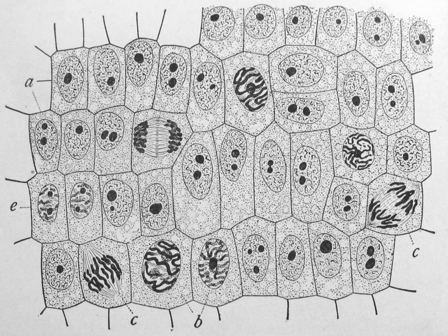Most plant and animal cells are visible only under a microscope, with dimensions between 1 and 100 micrometers. Cells were discovered by Robert Hooke in 1665, who named them for their resemblance to cells inhabited by Christian monks in a monastery. Cell theory, first developed in 1839 by Matthias Jakob Schleiden and Theodor Schwann, states that all organisms are composed of one or more cells, that cells are the fundamental unit of structure and function in all living organisms, and that all cells come from pre-existing cells. Cells emerged on Earth at least 3.5 billion years ago.